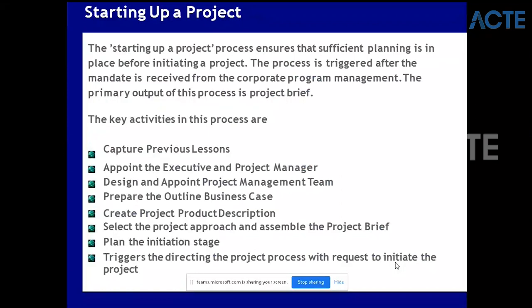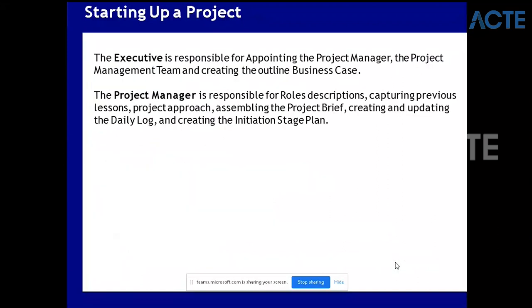The outline business case - the outline just contains the basic points of the business case, like what is the project and what is the outcome, at a very high level. In the initiation phase you will go into detail - this outline is only for getting approval from stakeholders. During Starting Up a Project, the executive is responsible for appointing the project manager and project management team and creating the outline business case. The project manager is responsible for role descriptions, capturing previous lessons, project approach, assembling the project brief, creating the daily log, and creating an initiation plan.